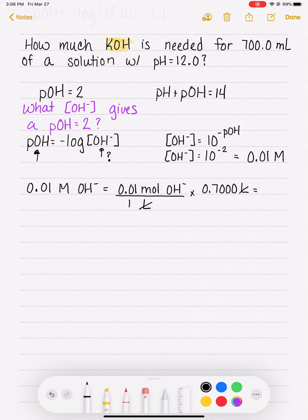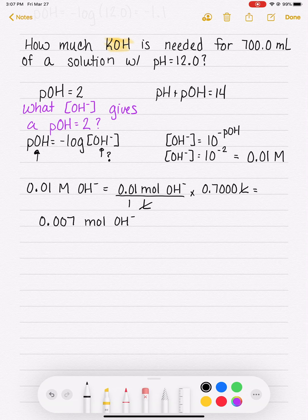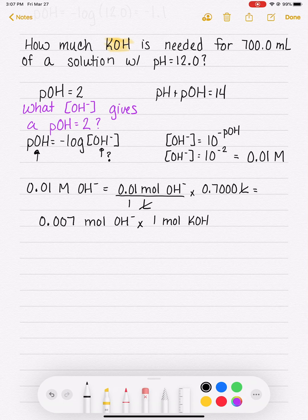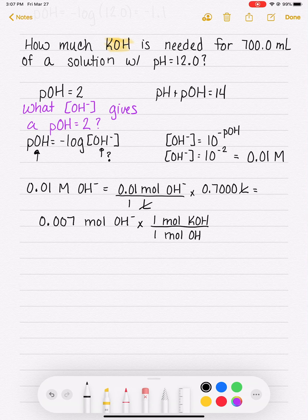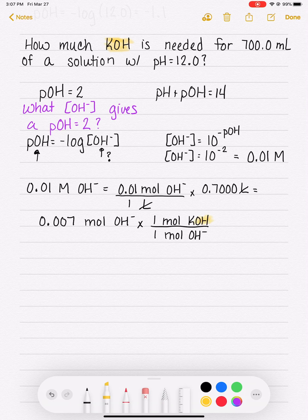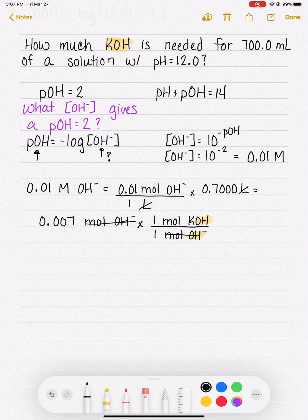And that is 0.007 moles of OH minus. Now we don't have OH minus available to us. We have KOH. But from the formula of KOH, we can see that every KOH molecule gives us one OH ion. And that's just coming from there's one OH in the KOH. So that cancels out. And now we know how many moles of KOH we need.